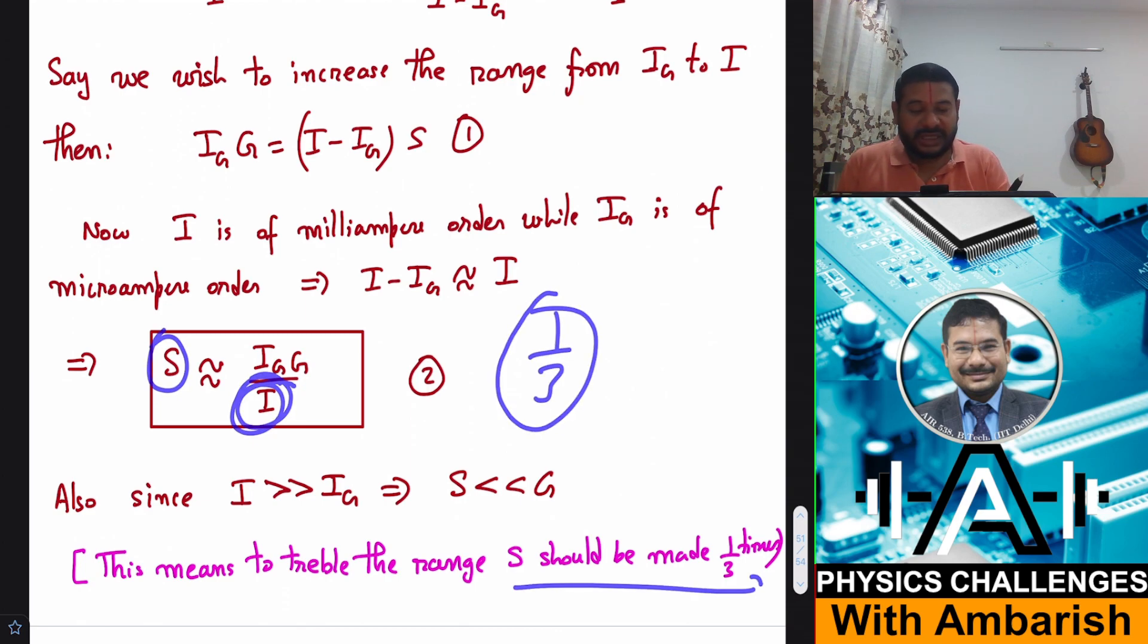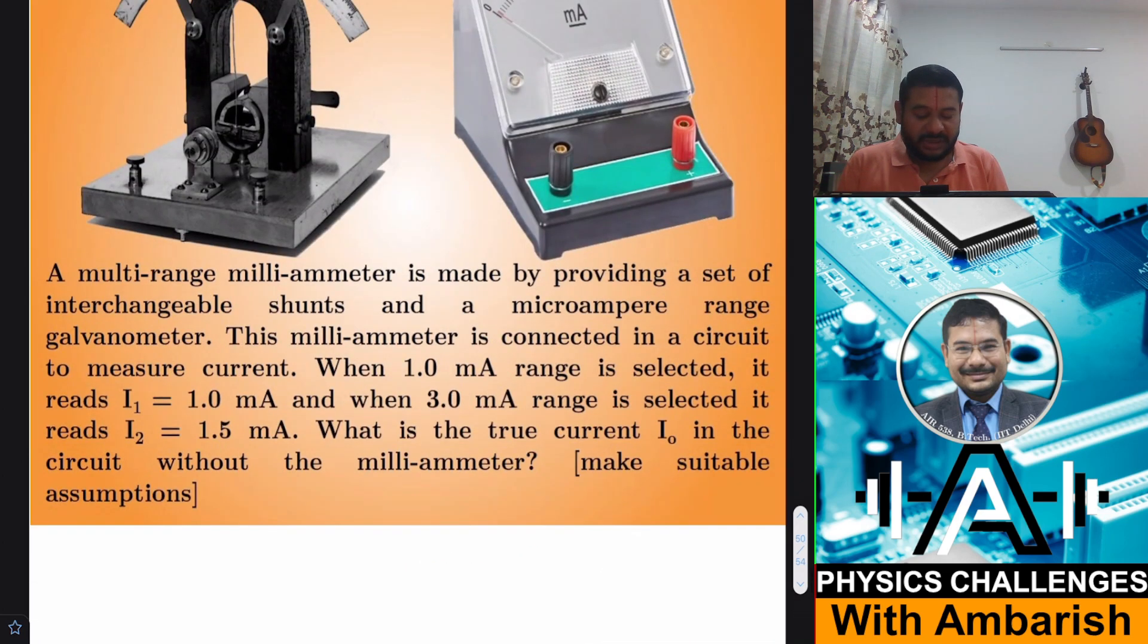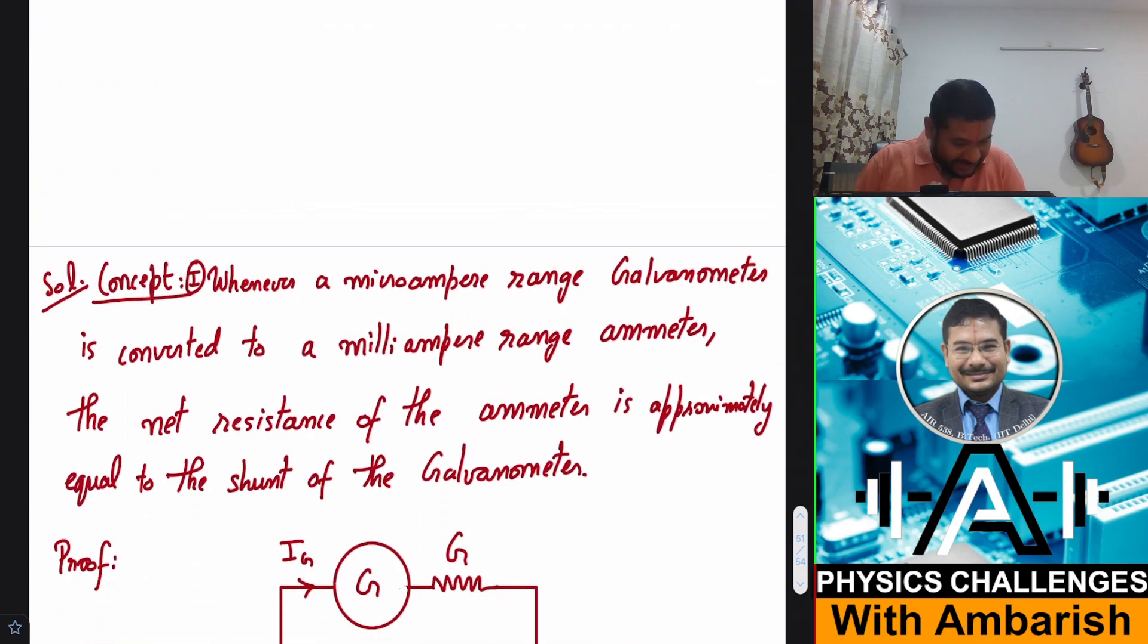Why? Because when you make this I three times then S obviously becomes 1 by 3 times. Now why I am talking about 3 times, because if you see in the original question the initial range was 1 milliampere and the final range is 3 milliampere. So that's why I am talking about tripling the range.